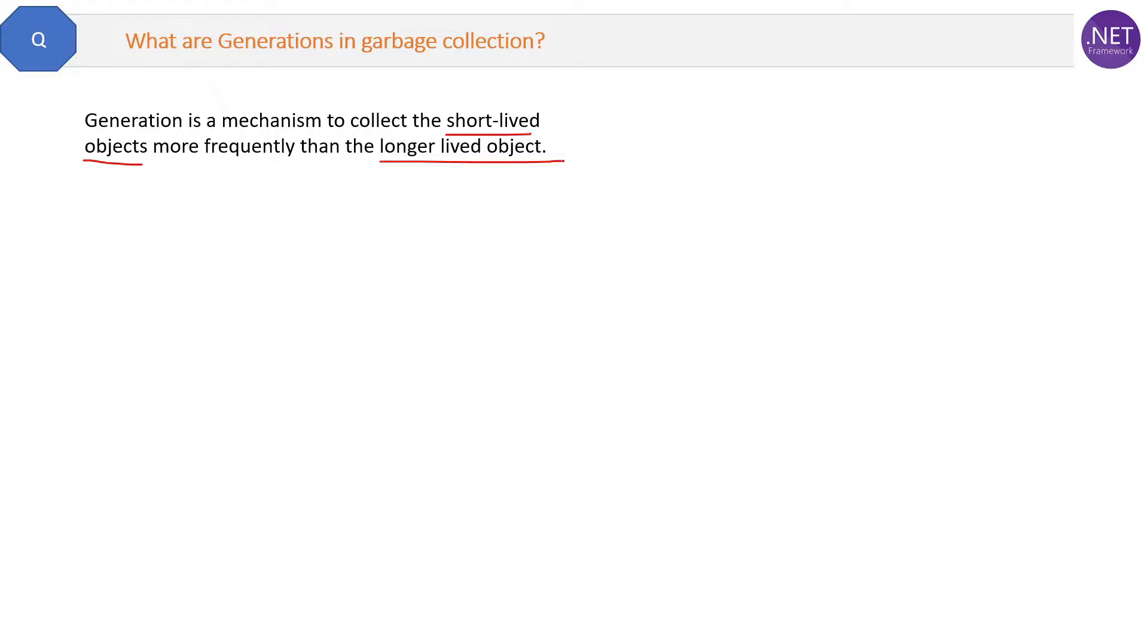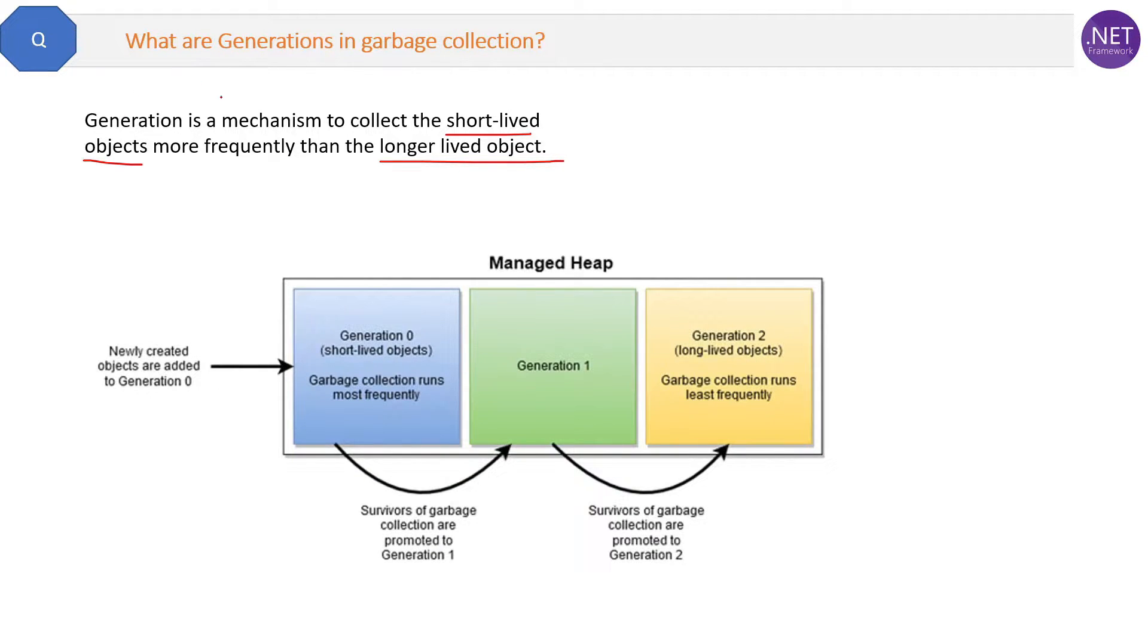First, how many types of generations are there? We have three types of generations: Generation 0, Generation 1, and Generation 2.